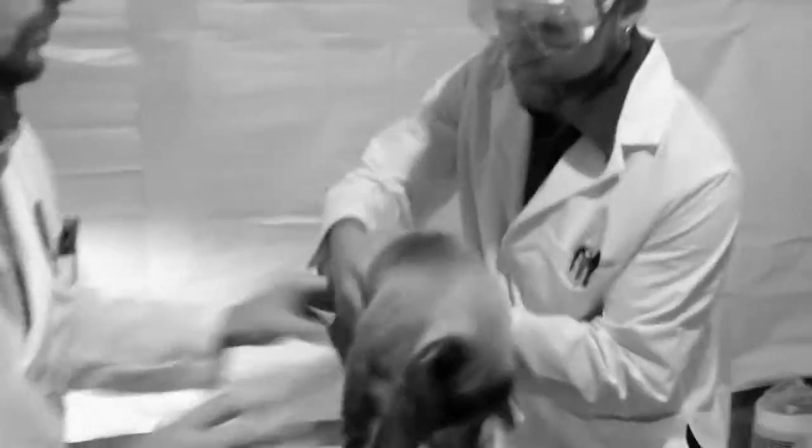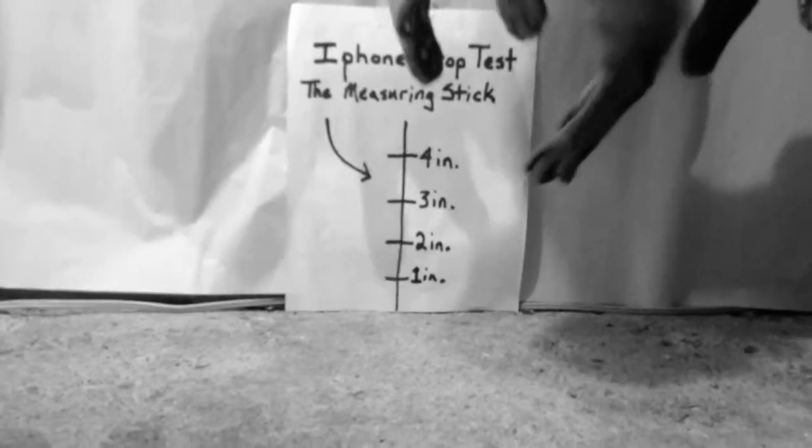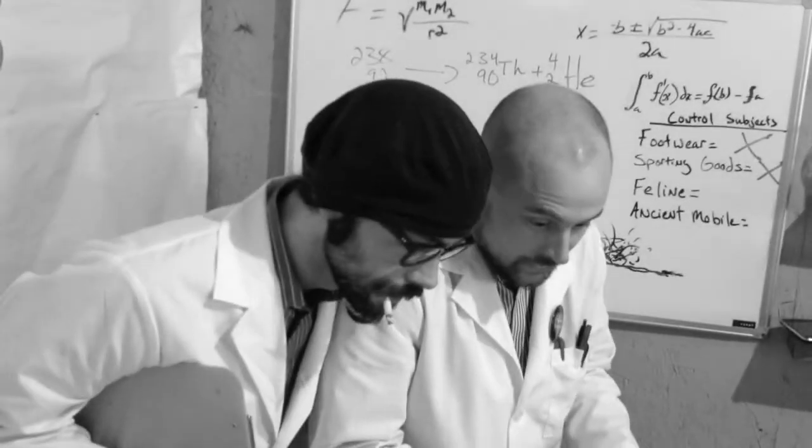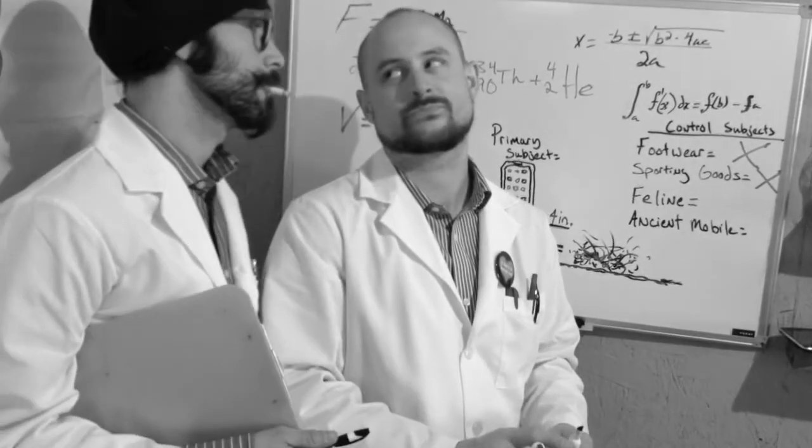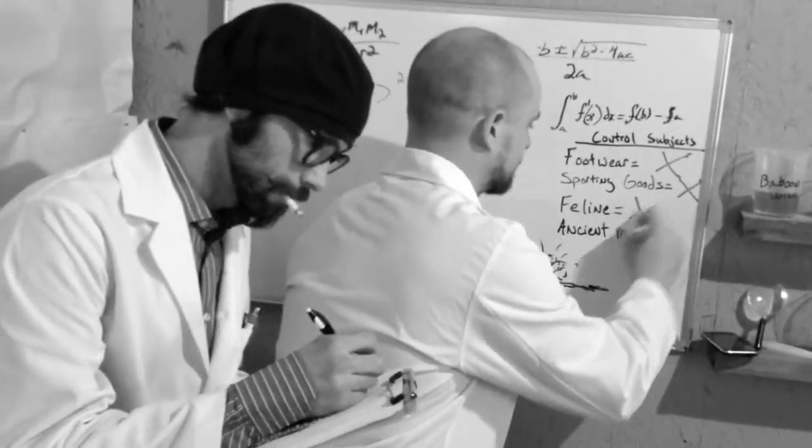Control subject number three. The domestic house cat. Easy. Sorry, whiskers. Looks like you still have nine lives.